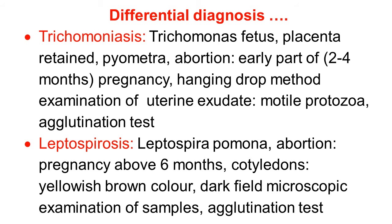Another disease is leptospirosis, caused by Leptospira pomona. Abortion occurs above 6 months of pregnancy. The cotyledons are yellowish-brown in color. Leptospira pomona can be examined by dark-field microscopic examination of samples and can be confirmed by agglutination test.